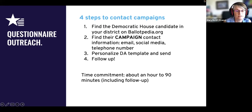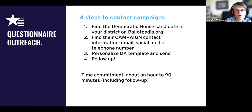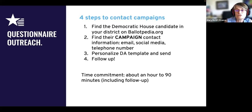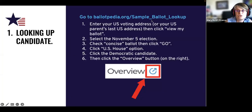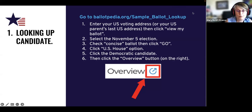I've already started doing some candidate outreach before this, including some primary work, because there are still primaries that haven't happened. Now I'm focusing on my personal district, which is NJ-07. This is the example we're going to go through today - how I found out who my candidate was, because she is not an incumbent. The first thing I needed to do was go onto Ballotpedia. When I went onto Ballotpedia, I had to type in my U.S. voting address and select the November 5th election. We're going to be going through this for you live, and you'll see how I found who my candidate is.